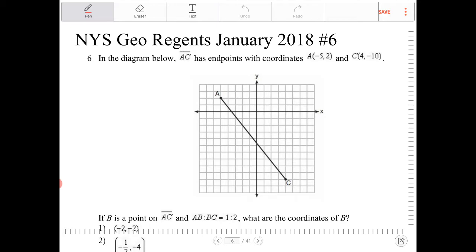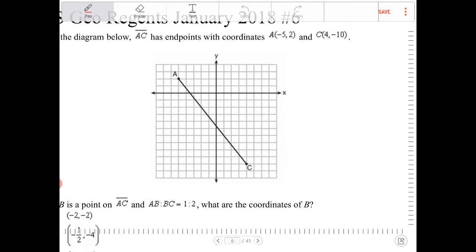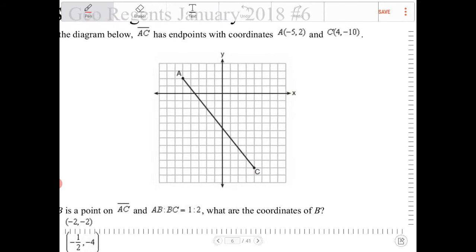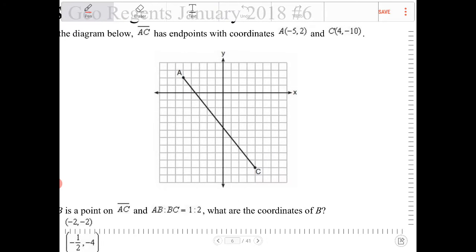So this question comes up all the time on the regents, and this is actually a similar triangle question in disguise. We're looking for a point that's in between AC, and that point is going to be labeled with the letter B. So I don't know where that point is. I'm just going to place it there. I do recognize that the point should be somewhere closer towards A than it is towards point C. And the ratio between the distance from one endpoint to point B, and then from point B to the other endpoint has to have a ratio of 1 to 2.